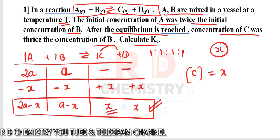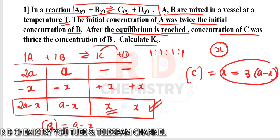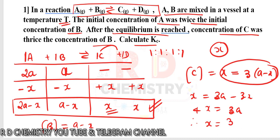The question states that concentration of C is thrice the concentration of B at equilibrium. Concentration of C = x, and concentration of B = a − x. So x = 3(a − x), which gives x = 3a − 3x, or 4x = 3a, therefore x = 3a/4. So x can be expressed in terms of concentration 'a'.